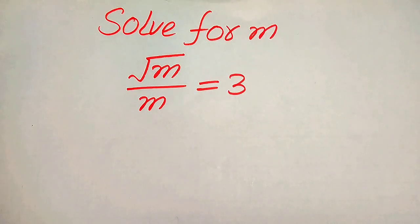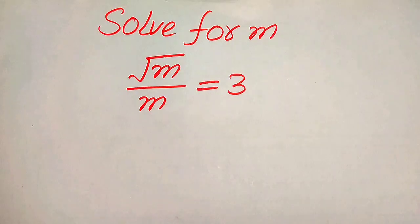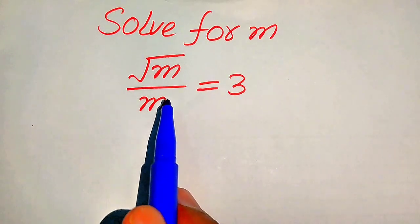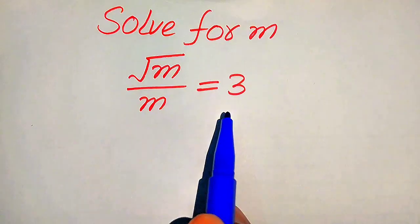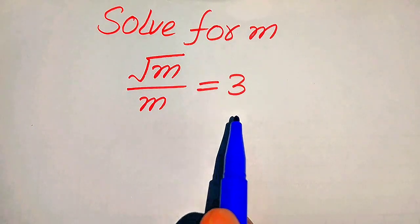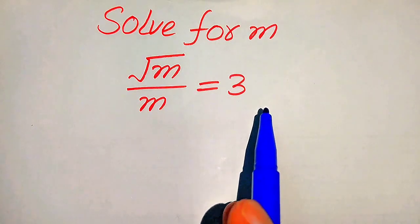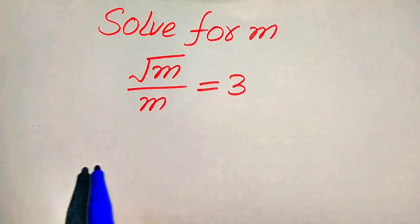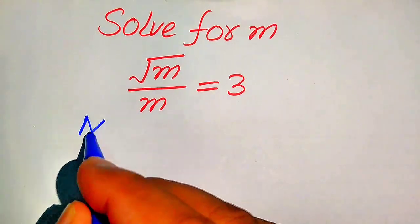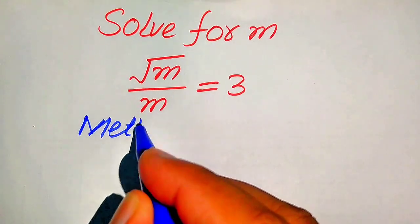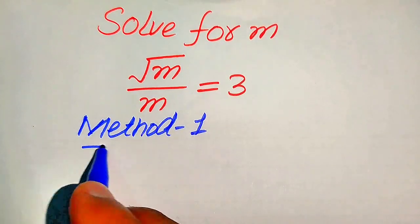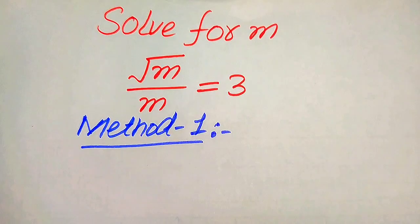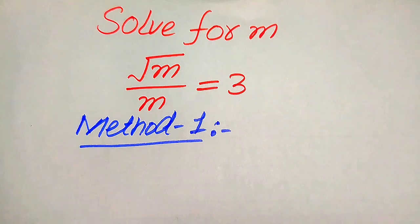Hello everyone. How to solve this problem for the values of m: if we have square root of m divided by m equals 3. We solve this problem using two methods, and I hope you like both of these methods. If you have any other method in mind, please don't hesitate to write it in the comment section.